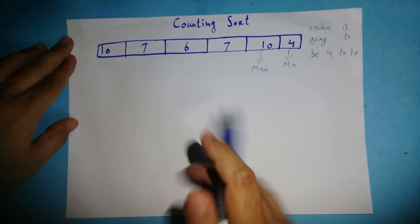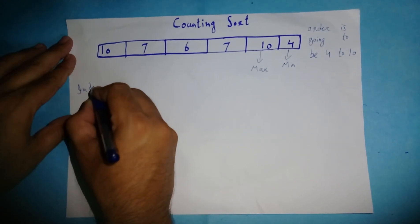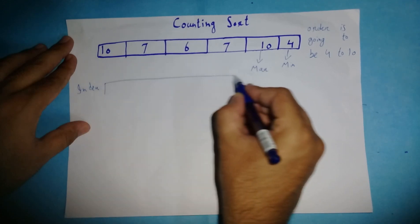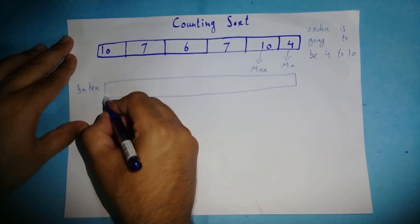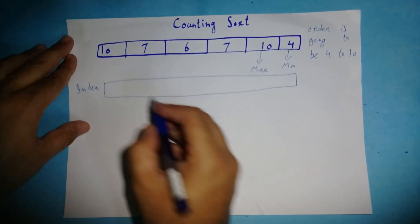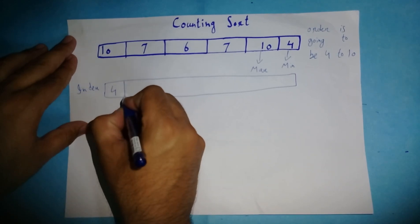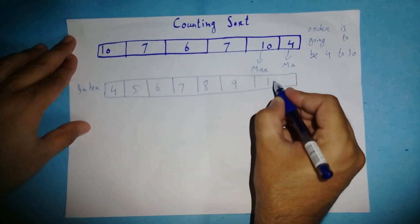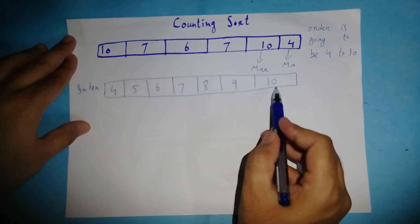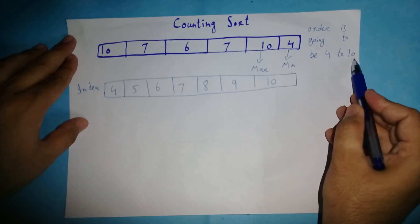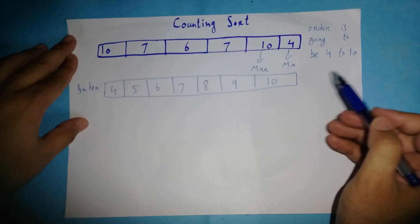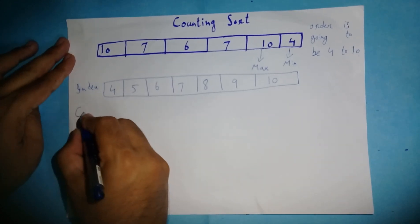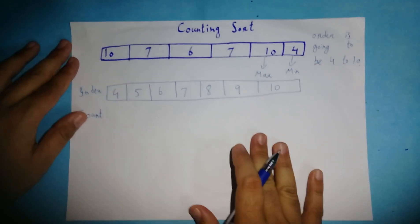When using counting sort, there are some steps to follow. The first step is to make an index array according to the order taken from the given array. Our order is 4 to 10 because 4 is the minimum and 10 is the maximum. So the indexes are: 4, 5, 6, 7, 8, 9, and 10. The first step is now complete.